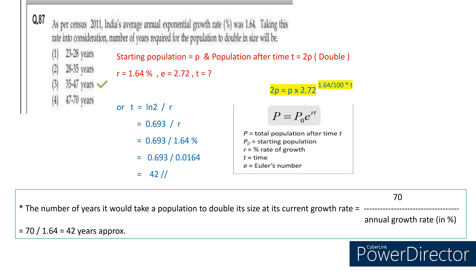The answer is the third option. You can also use another formula: 70 divided by the annual growth rate in percentage. The advantage of this is you don't need to convert 1.64% into a decimal — you can directly put 1.64 in the denominator with 70 in the numerator. So 70 divided by 1.64 gives approximately 42 years. For example, if the growth rate is given as 2, then 70 divided by 2 gives 35 years. I hope it is clear.